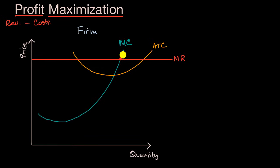Why is that? Well, if the marginal cost is higher than the marginal revenue, that would be like saying: I'm going to sell a donut for a dollar even though that incremental donut costs me a dollar ten to produce. No rational person who wants to maximize their profit would do that. So a rational firm trying to maximize its profit will produce the quantity where marginal cost intersects marginal revenue.